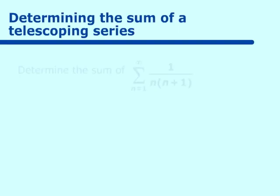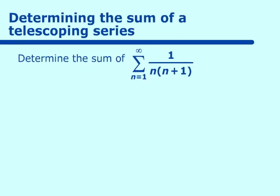Let's determine the sum from n equals 1 to infinity of 1 over n(n+1). First thing we will do is break this down into its partial fractions. So we have 1 over n(n+1) equals A over n plus B over (n+1).